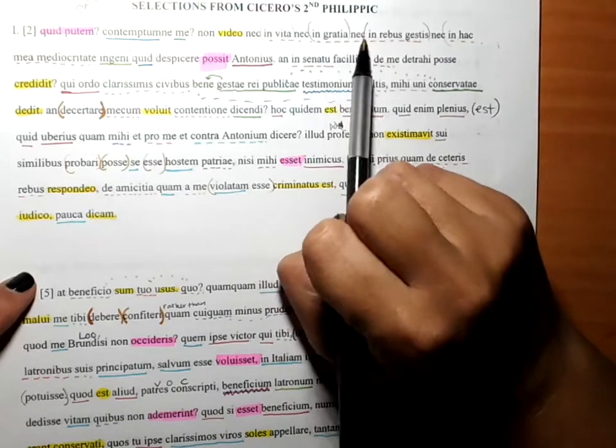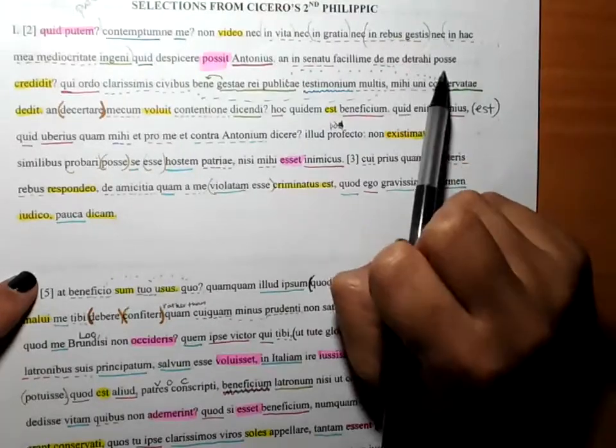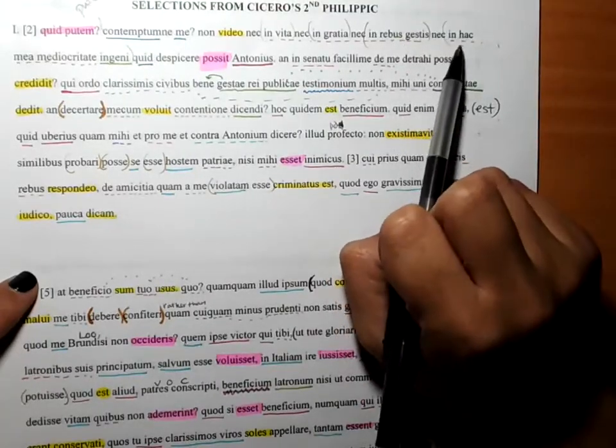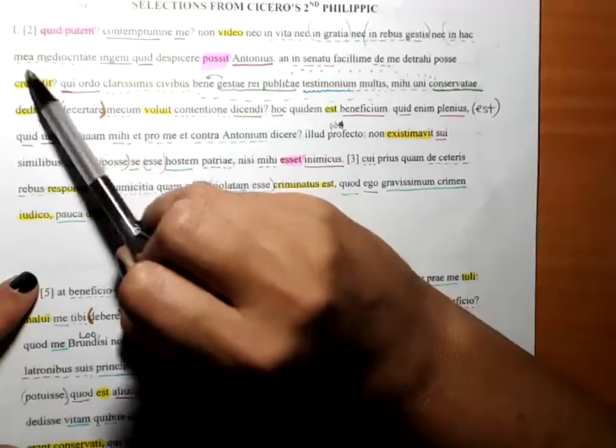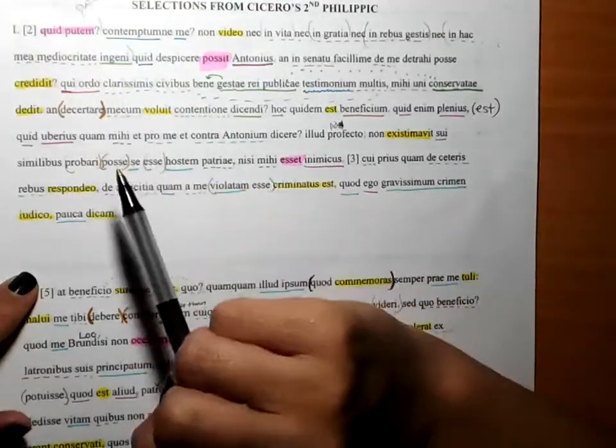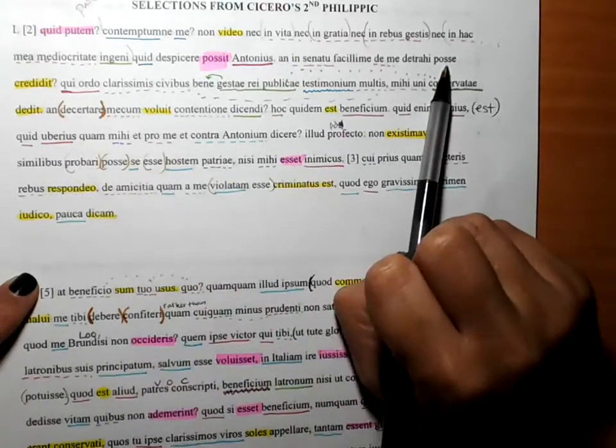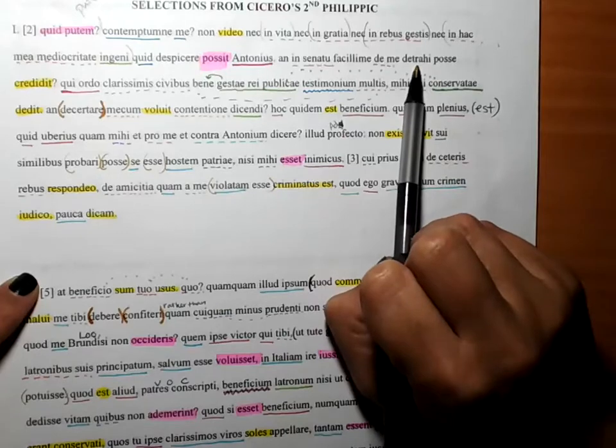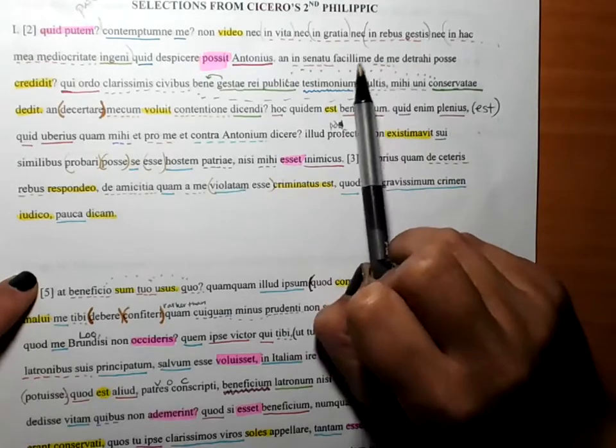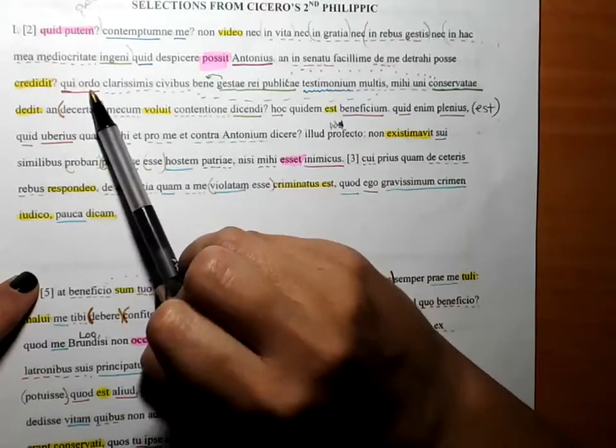...gratia, nor in things done by me, nor in this my mediocrity of genius or of talent. But he believed that he was able to be disparaging about me most easily in the Senate, this order.